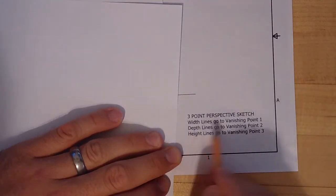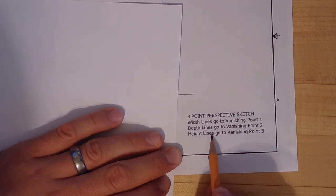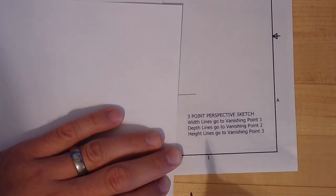Alright guys, we're going on to three-point perspective drawing today. Width lines go to vanishing point one, depth lines go to vanishing point two, and the change here now is height lines are no longer perfectly vertical, they go to vanishing point three. So let's take a look at what this is going to look like as we lay out a new drawing.